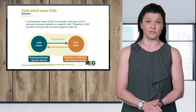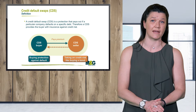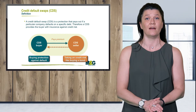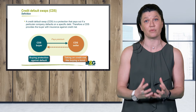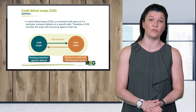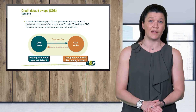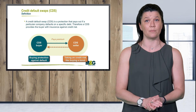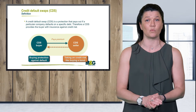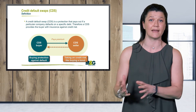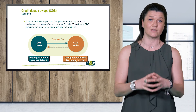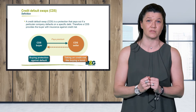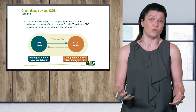The seller of CDS gains a premium for taking on default risk, thus hoping for no defaults in order to keep the premiums. If a default occurs, he will have to pay out the notional to the buyer. In this respect, a buyer is reducing credit risk while the seller is taking on credit risk and is compensated by the receipt of fixed coupons — a lot like buying a physical bond.